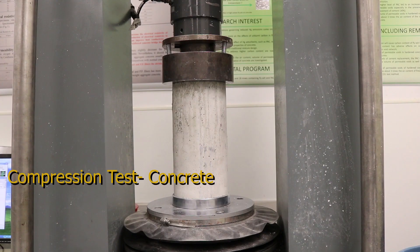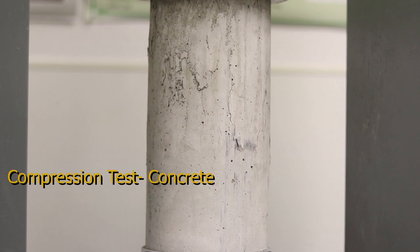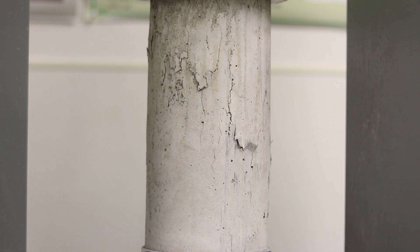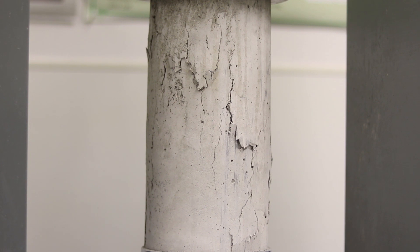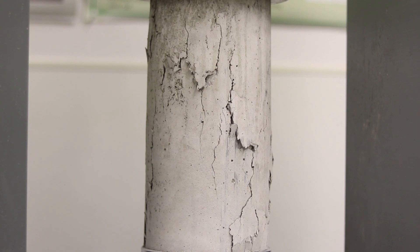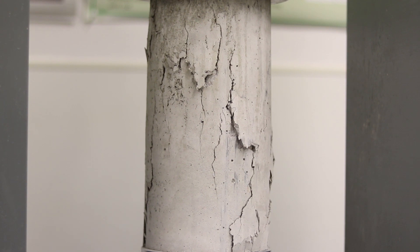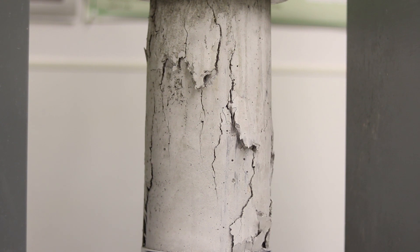The compression test is one of the most fundamental material tests to determine the properties of materials needed for the design of structures. The main purpose of this test is to obtain the relationship between the average normal stress and average strain in most engineering materials. These properties are needed for the design of structures. For this test, a cylindrical concrete specimen is subjected to a compressive force while the elongation is measured using an LVDT.